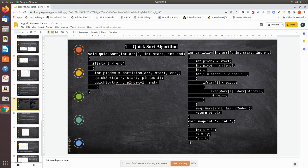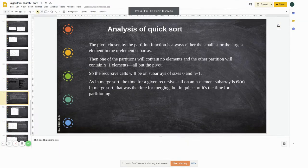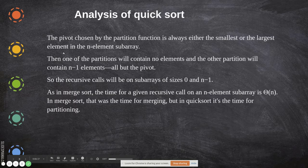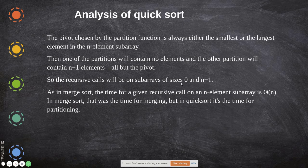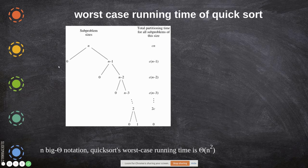Now let's go to the analysis part. The pivot chosen by the partition function is always either the smallest or the largest element of the n-element subarray. Then one of the partitions will contain no elements and the other partition will contain n minus one elements — all but the pivot. The recursive call will be on subarray sizes 0 and n minus 1. This is the worst case, because depending upon the partition element taken, the division may have the first half consisting of 0 elements and the rest in the other.